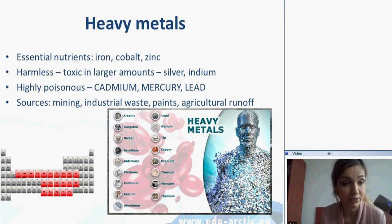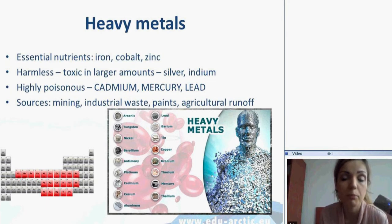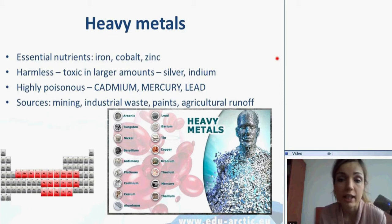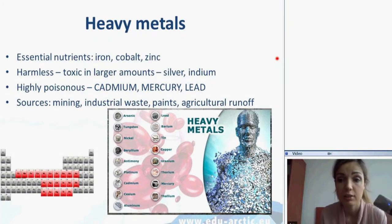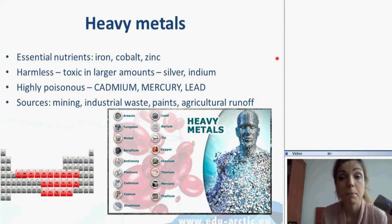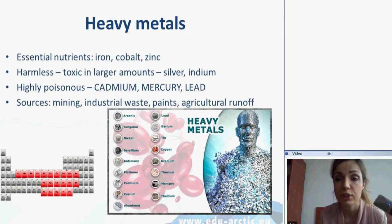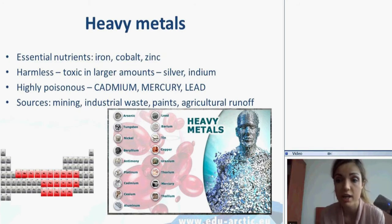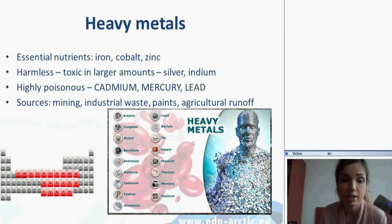Then we have heavy metals. Some heavy metals are essential nutrients, very important for our health, like iron, cobalt, and zinc. Some are relatively harmless, like silver and indium, though they could be toxic in larger amounts. But others, like cadmium, mercury, and lead, are highly poisonous. Potential sources of poisoning include mining, industrial waste, agriculture, paints, and timber production.